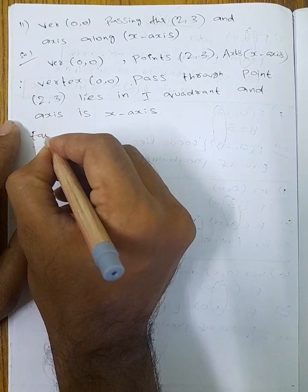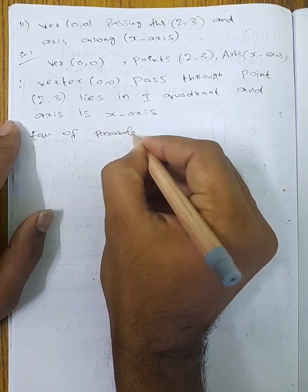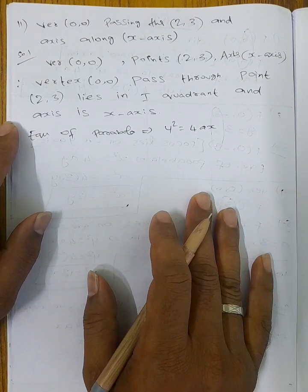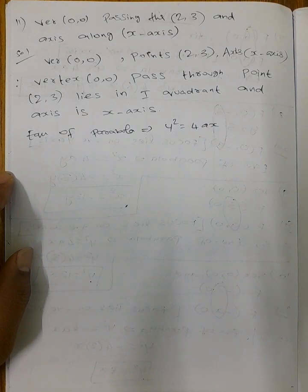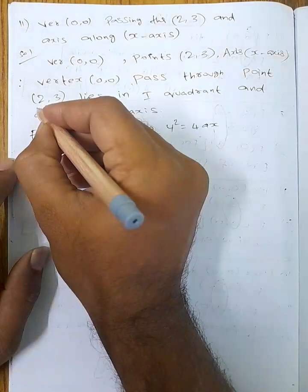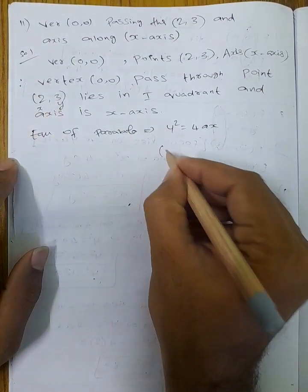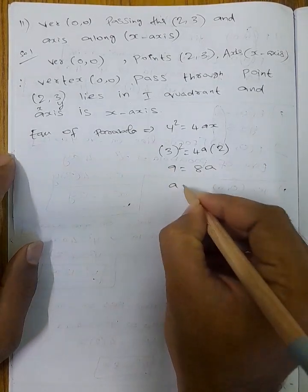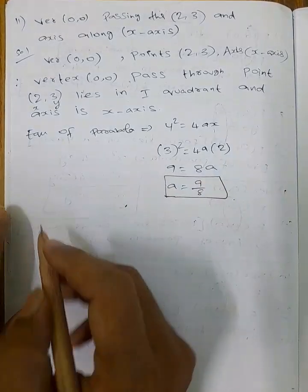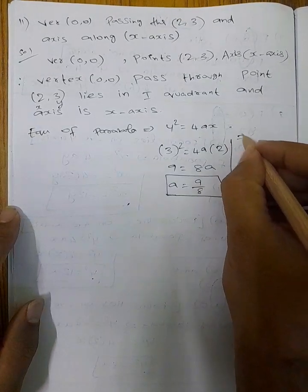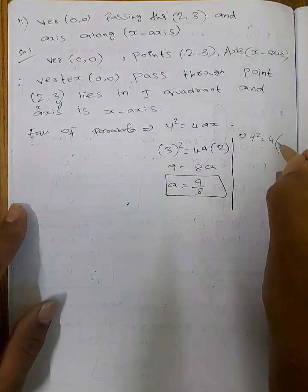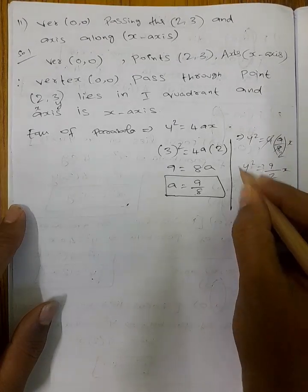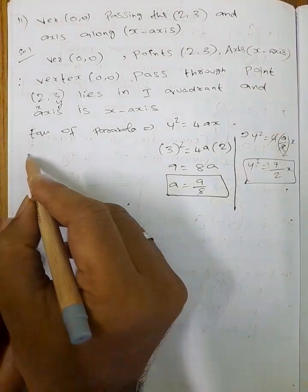So the equation of parabola is y² = 4ax. Substituting point (2, 3): 9 = 4a × 2, so a = 9/8. Therefore equation of parabola is y² = (9/2)x.